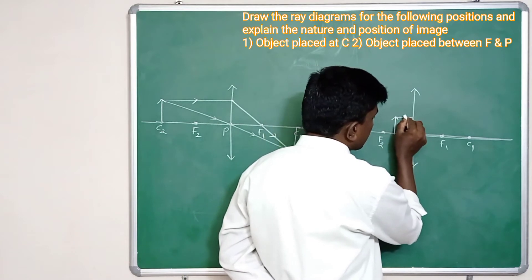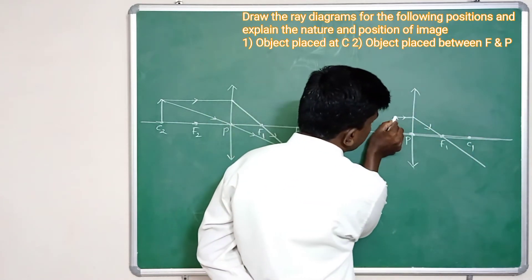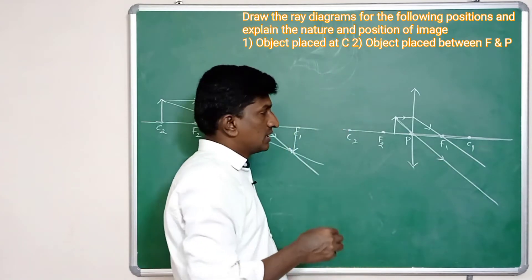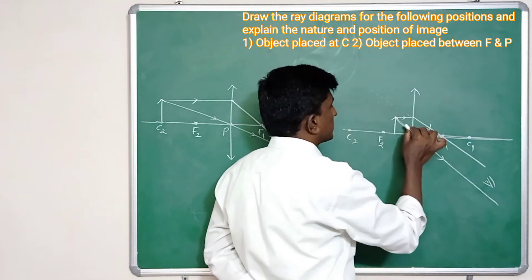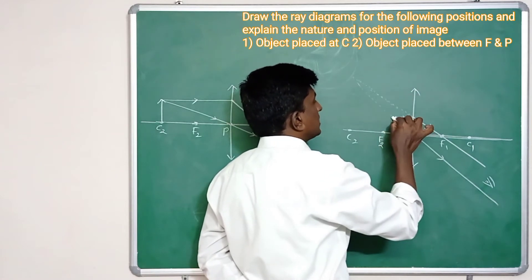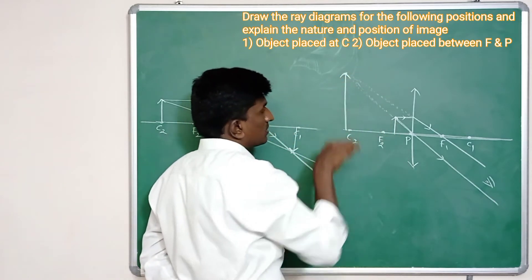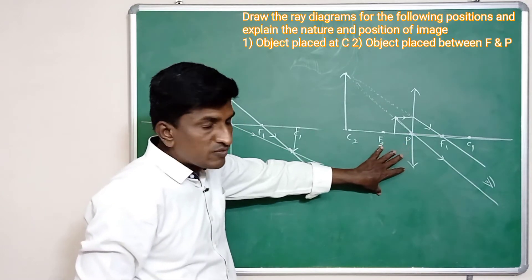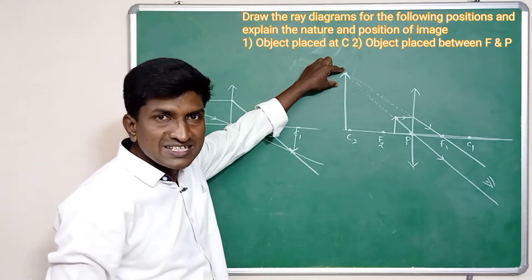First I am taking a parallel light ray. We know that a parallel light ray after refraction passes from the focus. The second light ray passes through the optical center — without any refraction this ray passes forward. If we observe from here, these two light rays appear to be coming from a particular point inside. If we prolong these two light rays, they intersect at a particular point and the image is formed there. The image formed by the convex lens is a virtual image, because it cannot be caught on the screen.